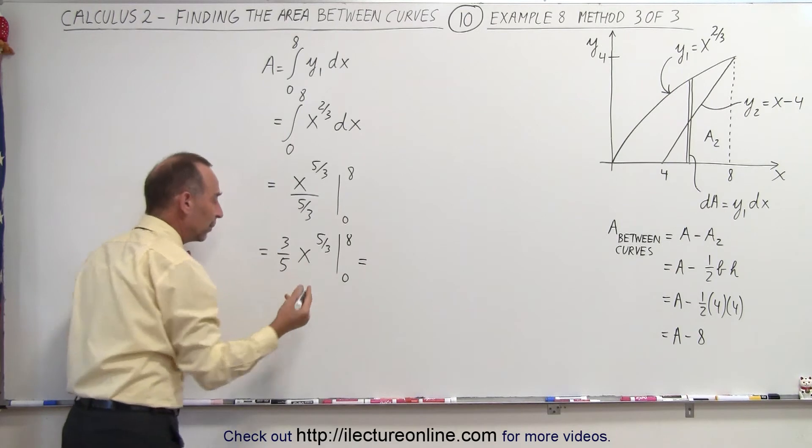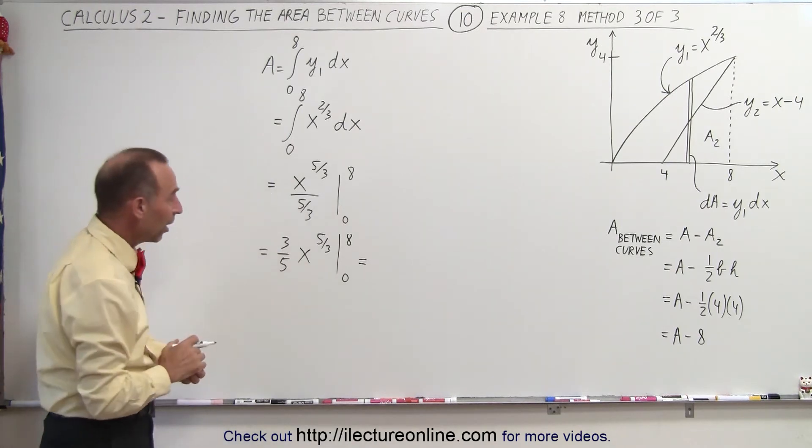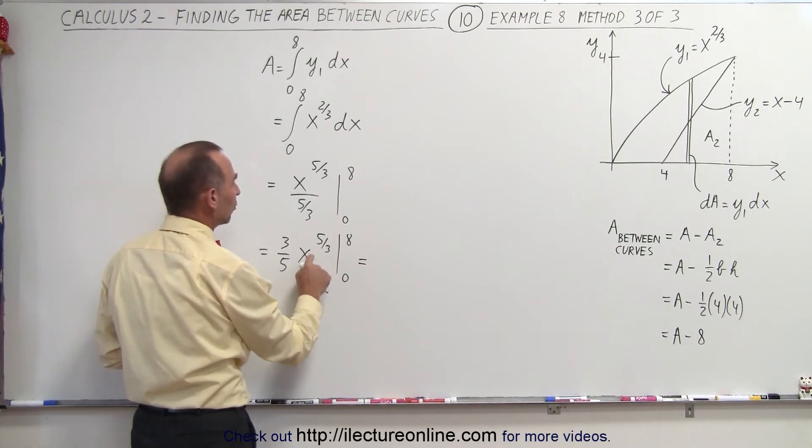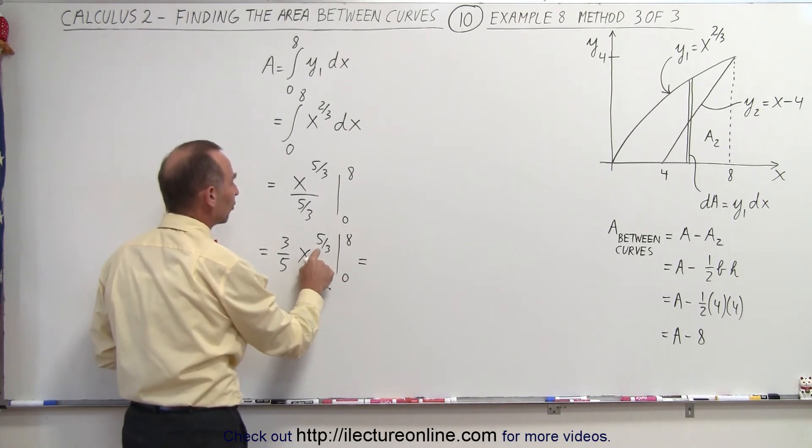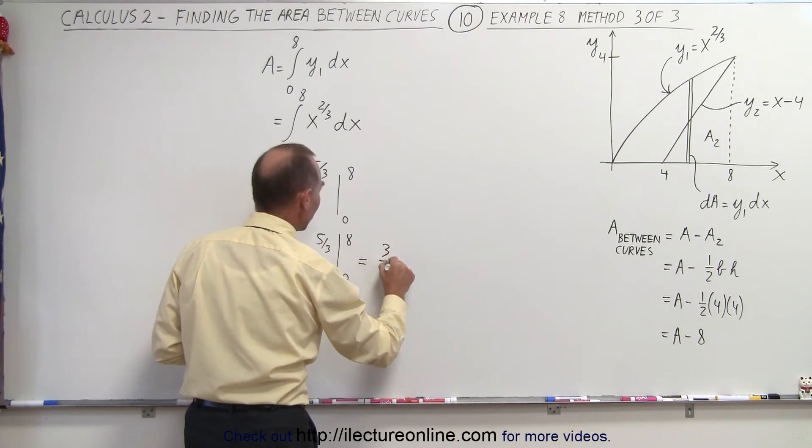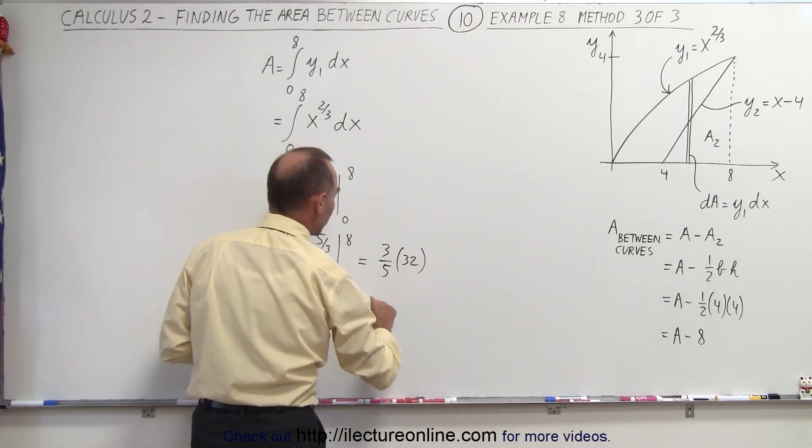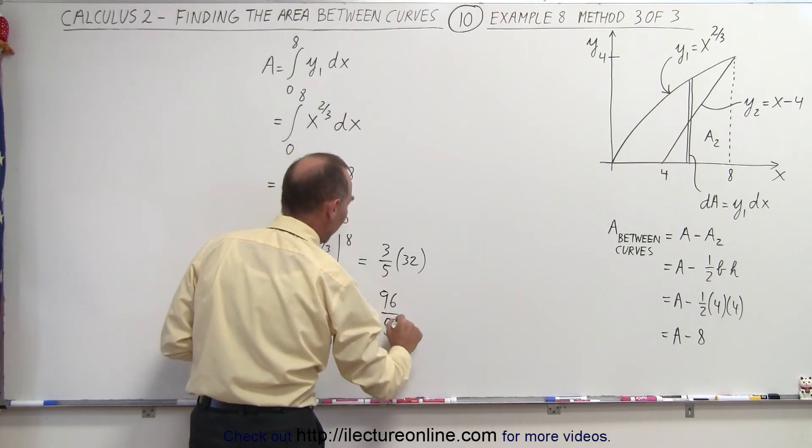When we plug in the lower limit we don't get anything, so all we need is the upper limit. When we plug in the upper limit we get 8 to the one-third power which is 2 raised to the fifth power, which is 32. That gives us three-fifths times 32, and so that will be equal to 96 over 5.